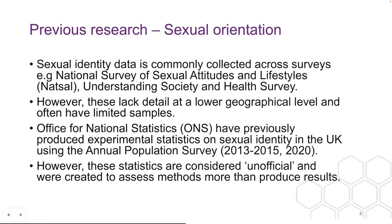In terms of sexual orientation, prior to the 2021 UK census, relatively little research addressed the UK's sexual orientation profile. Sexual identity information was collected in Natsal, Understanding Society, and the Health Survey for England, but not at lower geographical levels and often with quite limited sample sizes. The ONS also produced experimental statistics on sexual identity using data from the annual population survey, but this data is considered unofficial as it was created primarily to assess methods rather than to produce results.